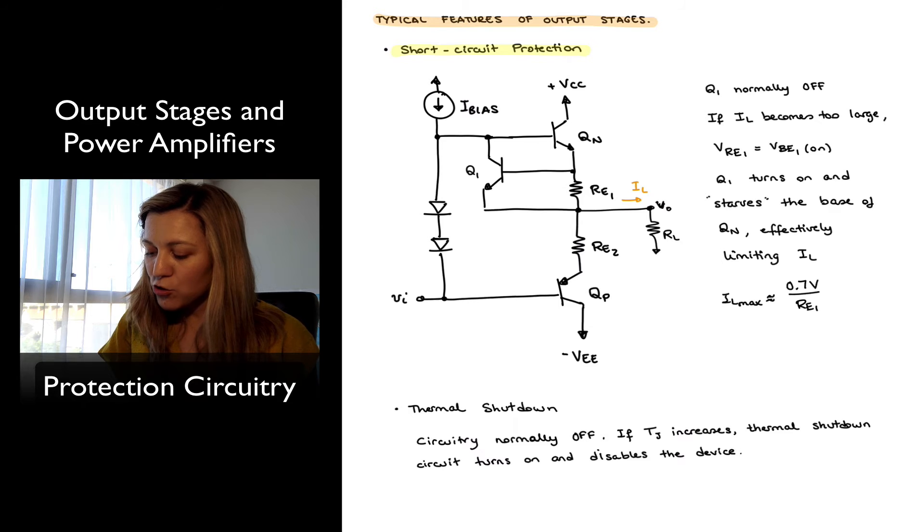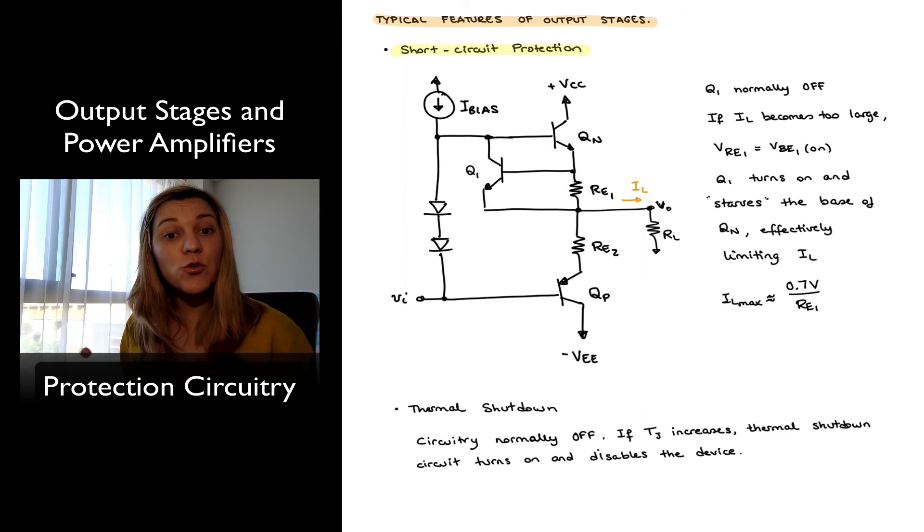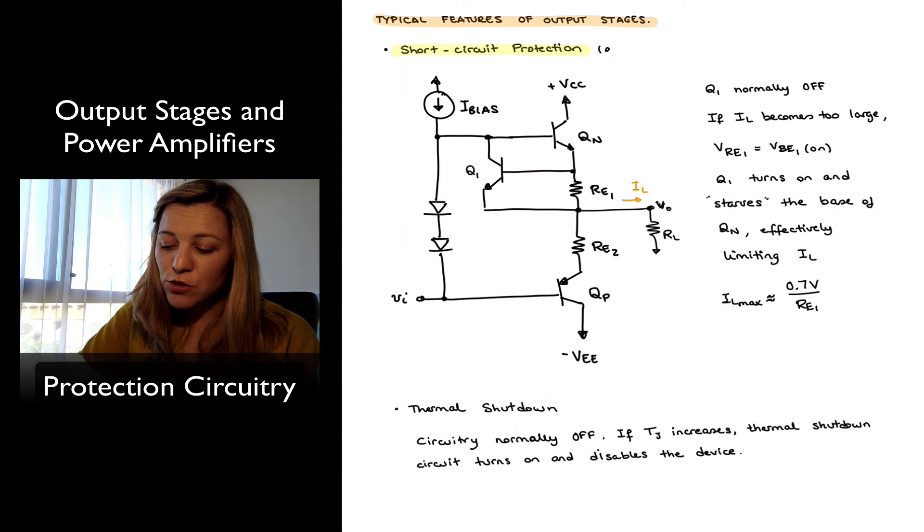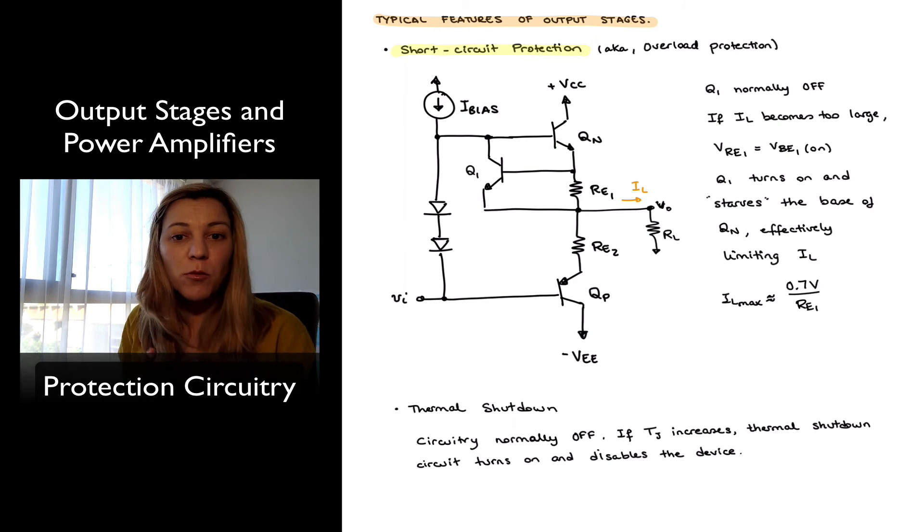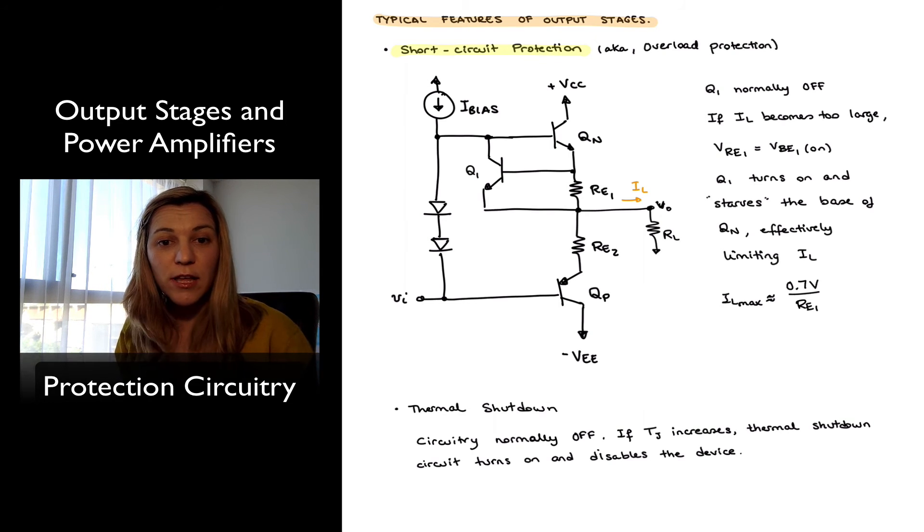And our short-circuit protection circuit starts to operate to limit that maximum output current. Short-circuit protection is also sometimes referred to as overload protection. And it protects against common mistakes such as shorting the output of a power amplifier or something like that.